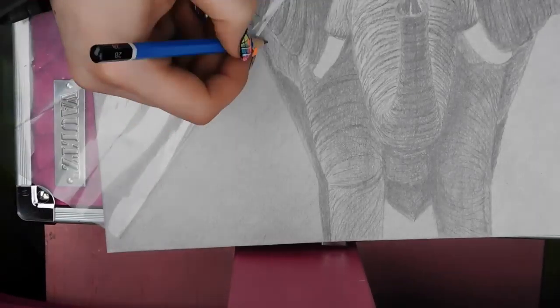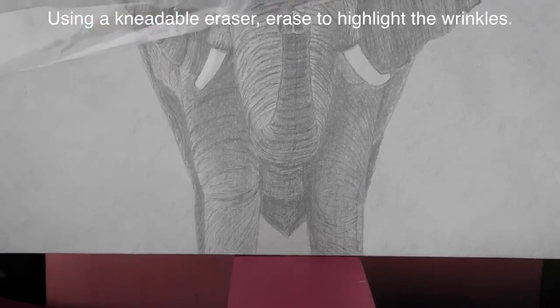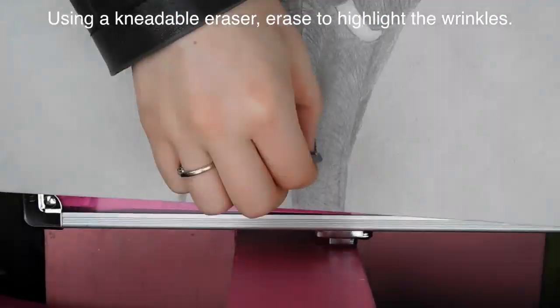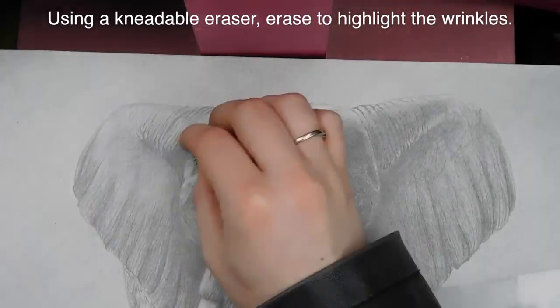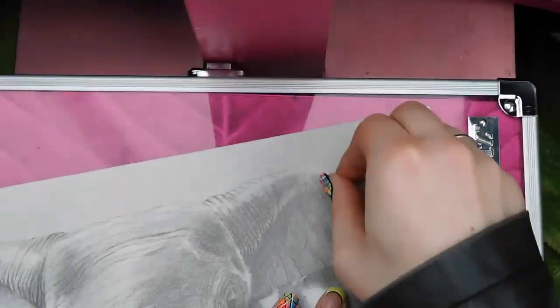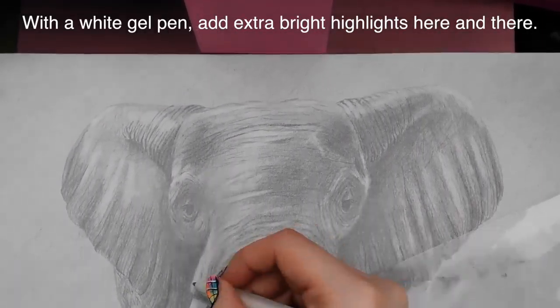With a kneaded eraser, I'm going to highlight all of the areas between the wrinkles—not every single section but just bits here and there to enhance and deepen the shape of your elephant.